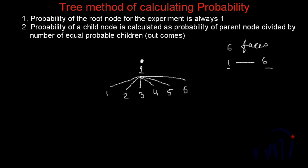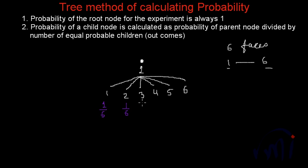So the probability of getting a 1 will actually be 1 by 6, where 1 is the probability of the parent node and 6 is the total number of equal probable outcomes. There are total 6 outcomes — you can get 1, 2, 3, 4, 5, or 6 on the top most face. Similarly the probability of getting a 2 will also be 1 by 6, and all the other nodes will also have 1 by 6 as the probability. This is the case when the dice is fair.